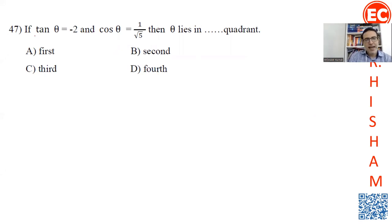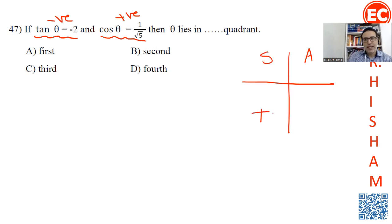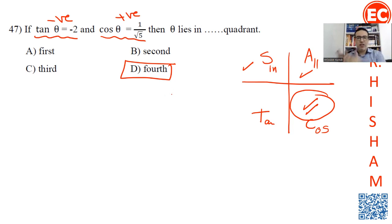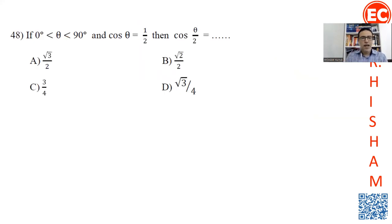Question 47: Tan is negative and cosine is positive. Using ASTC — All, Sine, Tan, Cosine — in the first quadrant all are positive, in the second only sine is positive, in the third only tan is positive, in the fourth only cosine is positive. Since cosine is positive and tan is negative, the angle lies in the fourth quadrant.